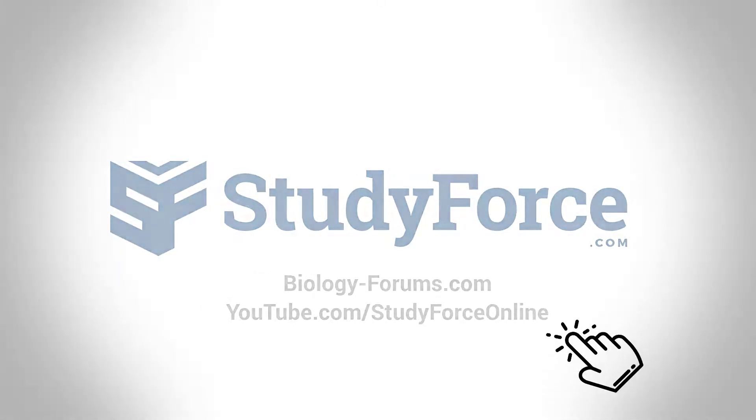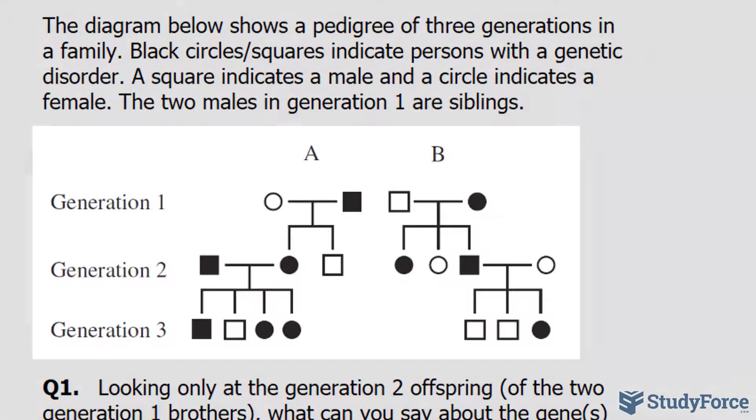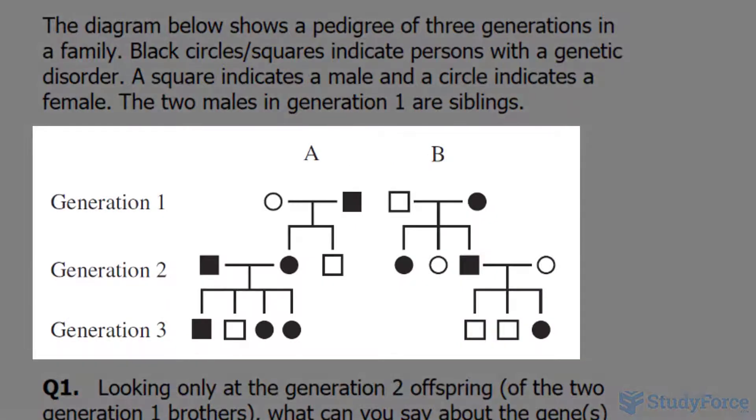In this lesson, we'll look at an example on how to analyze pedigrees. The question reads: the diagram below shows a pedigree of three generations in a family. Black circles and squares indicate persons with a genetic disorder. A square indicates a male and a circle indicates a female. The two males in generation 1 are siblings.